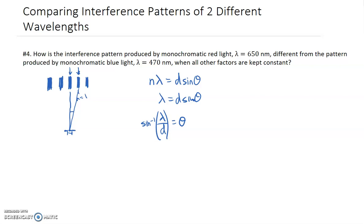So now we're going to take this separation distance between the slits as 650 nanometers. So I'm going to take that to be equal to the wavelength of the monochromatic red light. So if that's the case, in the red light case, what I'm going to be left with is sine inverse of 650 nanometers over 650 nanometers.